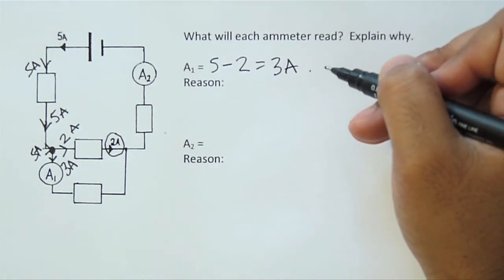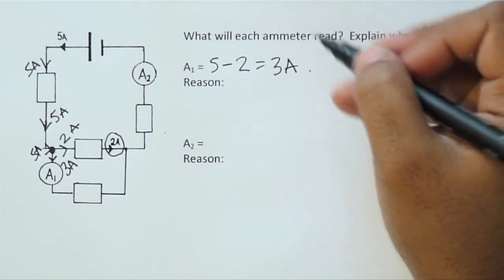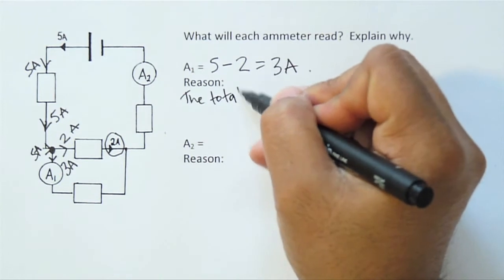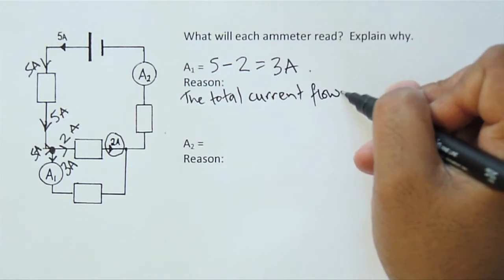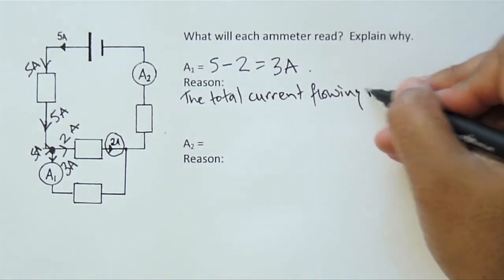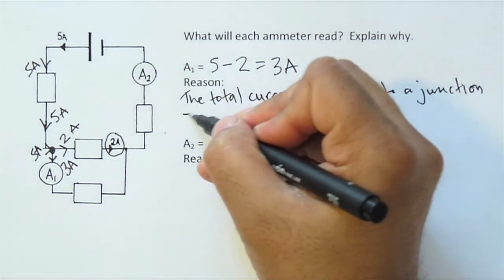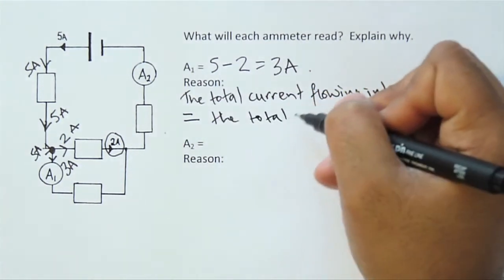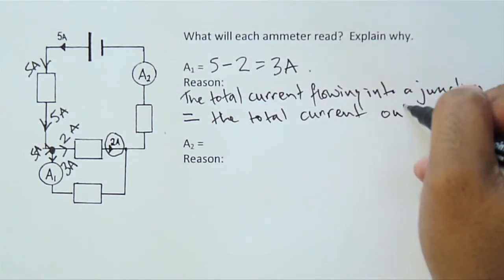Now the reason for this boils down to conservation of charge, which in this context we can express as the total current flowing into a junction is equal to the total current out.